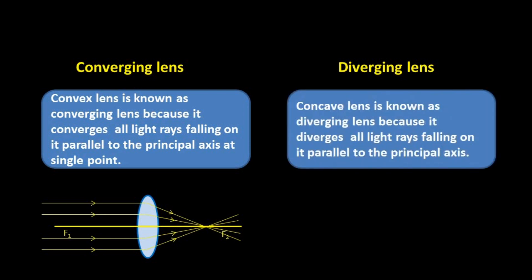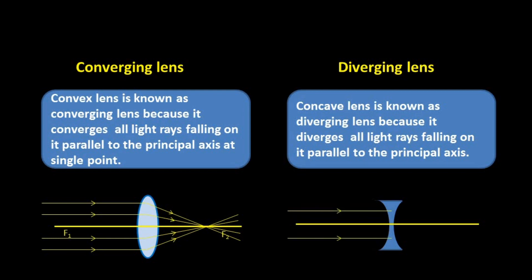Concave lens is known as a diverging lens because it diverges all light rays falling on it parallel to the principal axis. After refraction, the rays go away from each other and do not meet at a single point. So concave lens is known as a diverging lens, and convex lens is known as a converging lens.